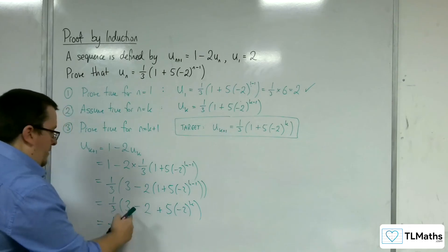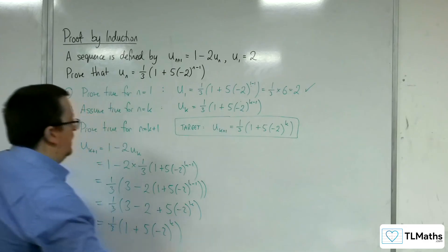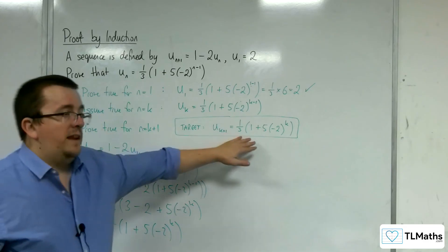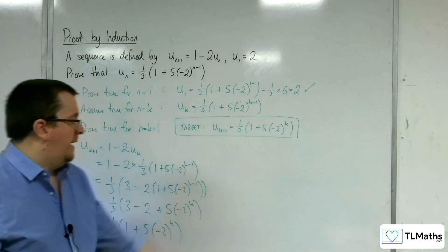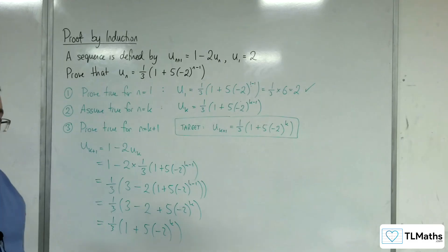and so I'm going to get plus 5 lots of minus 2 to the k. So I've got one third of 1 plus 5 lots of minus 2 to the k, which is precisely what I wanted. So I can see that I've arrived at the same thing that I was targeting, and that has proved it.